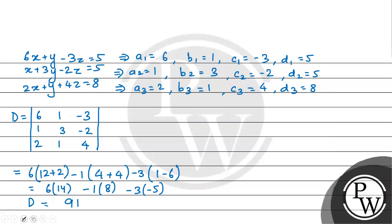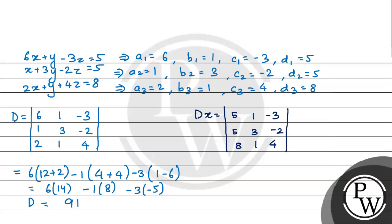Now the value of Dx: replace the first column with D values, giving rows [5, 1, −3], [5, 3, −2], [8, 1, 4]. This equals 5 multiplied by (12 plus 2), minus 1 multiplied by (20 plus 16), minus 3 multiplied by (5 minus 24). The value of Dx is 91 again.